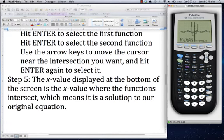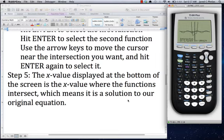As I say here in step 5, that x value displayed at the bottom of the screen is the x value where the functions intersect, which means it's a solution to our original equation. Very commonly what I'll want to do is take that intersection and store it. Currently it's saved as x. We can go back to the home screen and type x store, maybe alpha a, and now that value is stored to a.